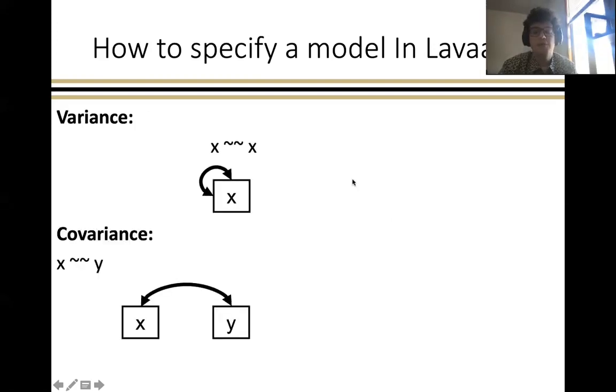To specify a variance of a variable, you would write the name of that variable twice, with two tildes in between. So x tilde tilde x would specify the variance of x, or the covariance of x with itself.